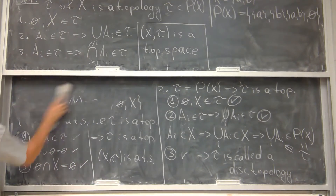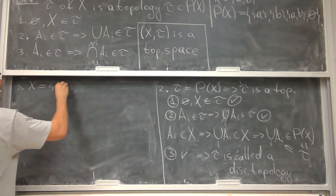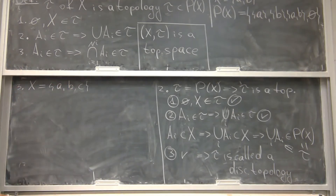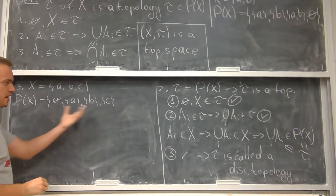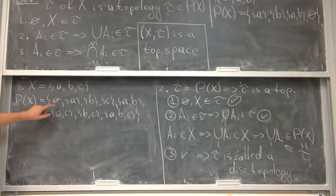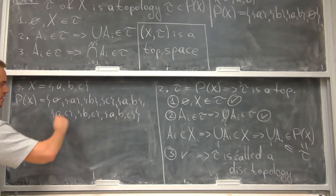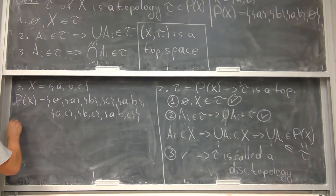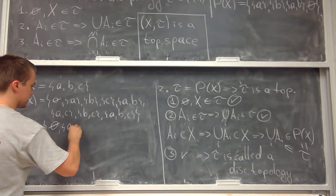Let me show you example number three. Let's take a more interesting set: X = {a, b, c}. You can check that P(X) consists of the empty set, all three single-element subsets {a}, {b}, {c}, all three pairs {a,b}, {a,c}, {b,c}, and the whole set — exactly eight elements. Now I want to choose a subset of this power set to define a topology τ₁. By definition I must include the empty set and X itself.